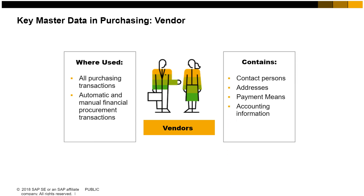The vendor master contains contact person details, addresses, payment means, and other accounting information. You can search for the appropriate vendor in any purchasing document. If you are authorized, you can also enter new vendor information while creating a purchasing document.